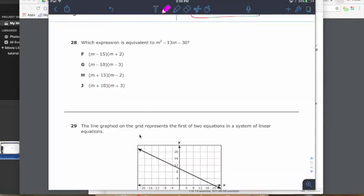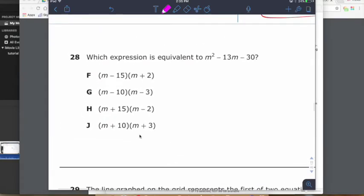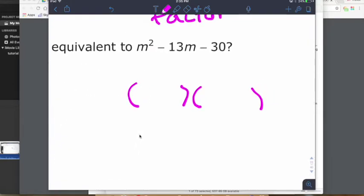You have which expression is equivalent to M squared minus 13M minus 30. Essentially what they're asking for is what foils back into your answer. You would take these and go foil all of them together, or you can do what's called the opposite of doing foil or multiplying two binomials. We can do what's called factoring. Essentially, that's a binomial times a binomial. We would need to find two things that multiply to M squared. So that would be M and M.